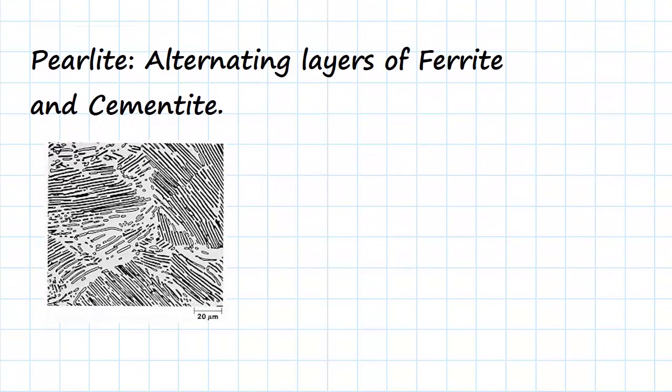So what is perlite? Perlite is alternating layers of ferrite and cementite which makes sense since we're having ferrite and cementite at the end. The resultant is going to be the alternating layers of both ferrite and cementite and it kind of looks like this picture here. So we've got alternating layers, strips of ferrite and cementite and we call this perlite.